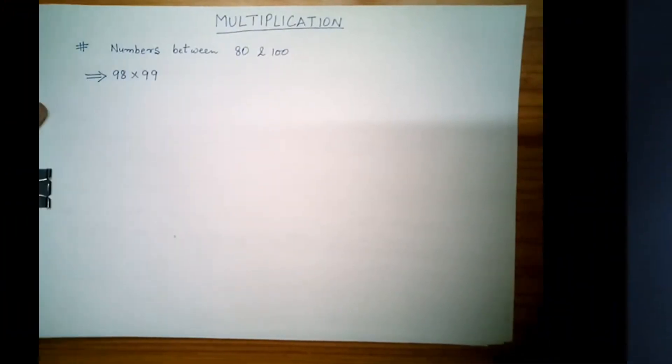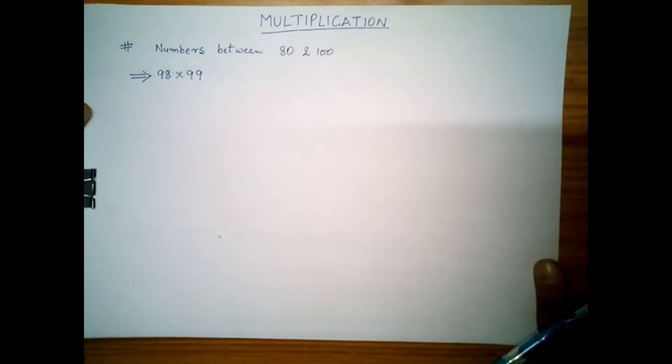In this video we will see multiplication of two numbers between 80 and 100. Multiplication of two-digit numbers will become easy after doing this video. Here we are given two numbers: 98 and 99.